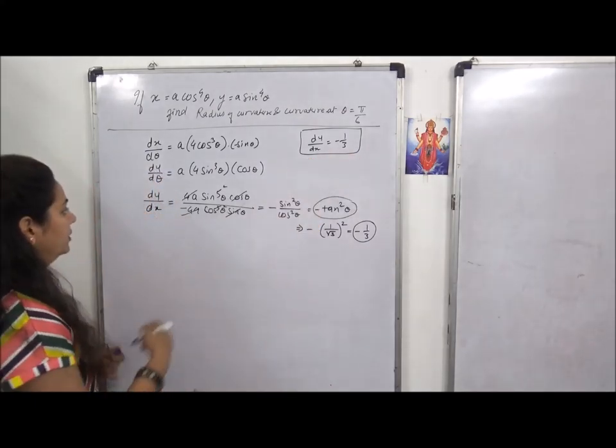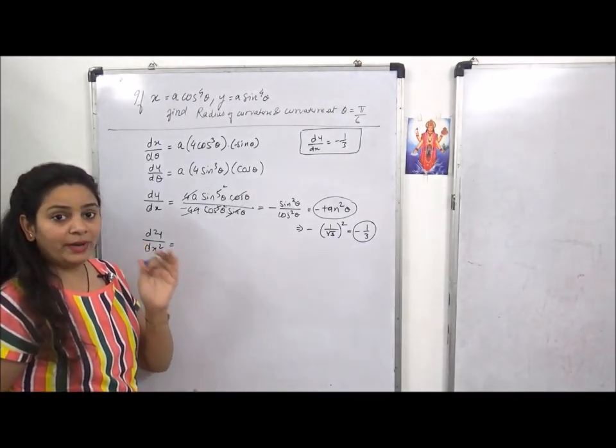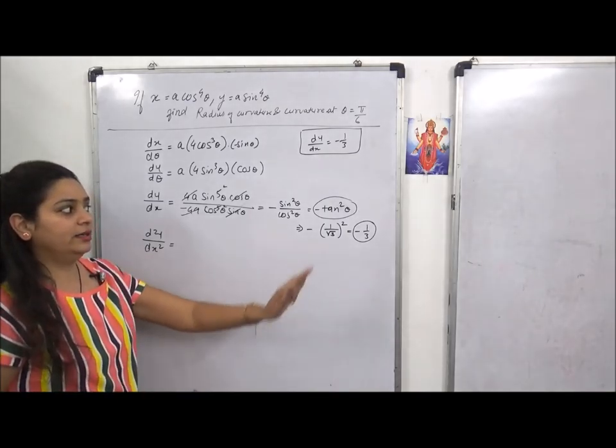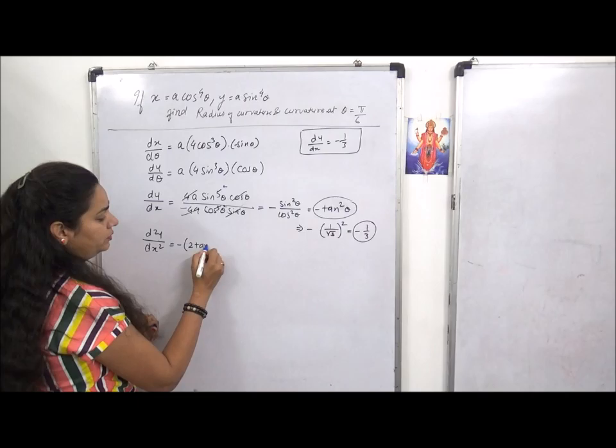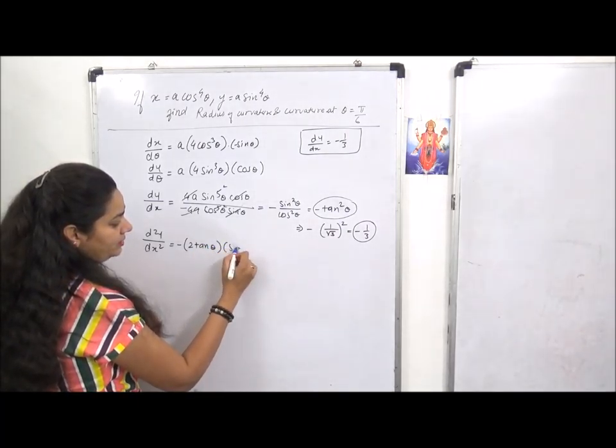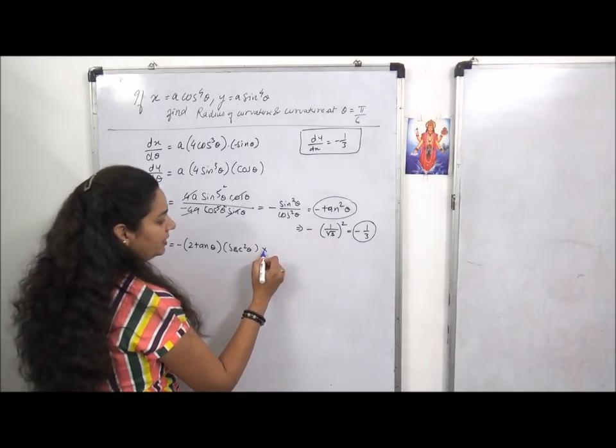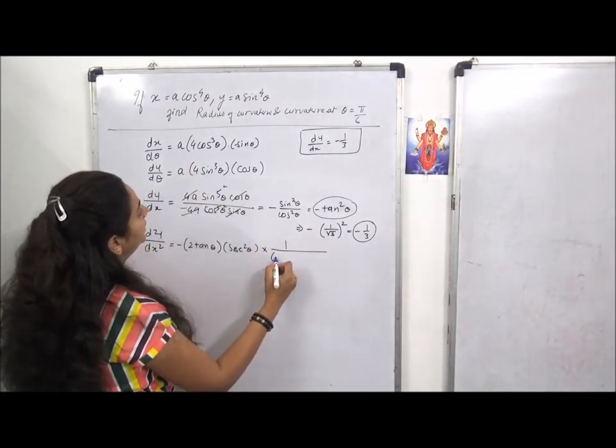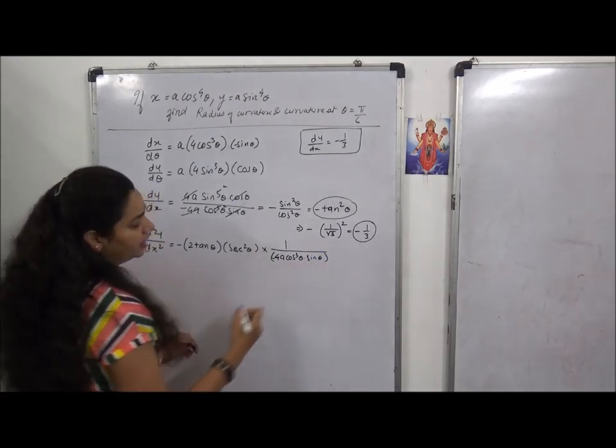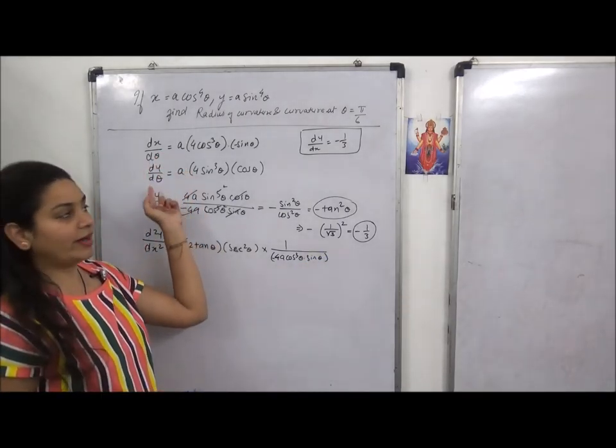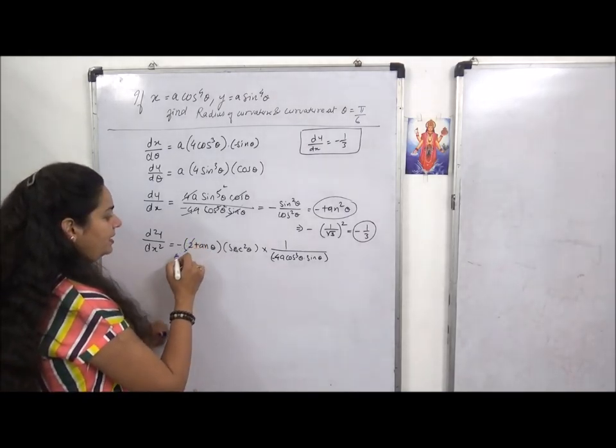I wrote it here because after finding d square y by dx square there won't be enough space on the board to show you the radius of curvature calculation. That's why what's important I've written separately here. Now coming to d square y by dx square, which is - what do we have to do?